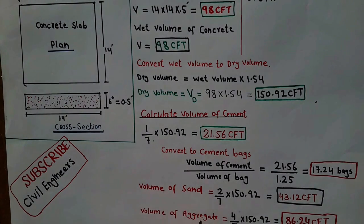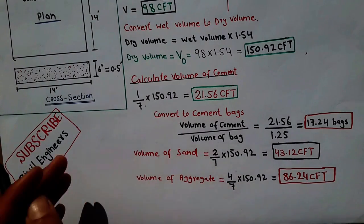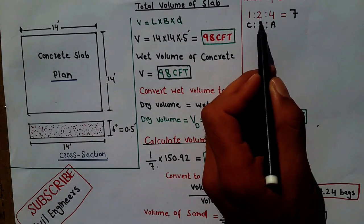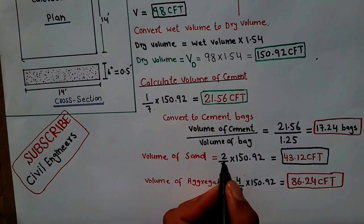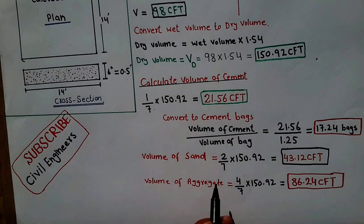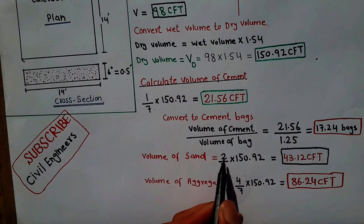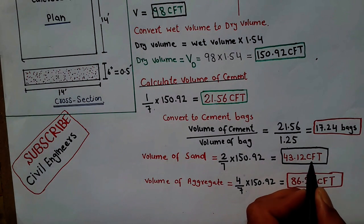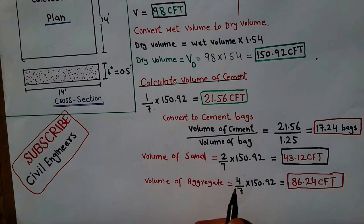For the volume of sand: sand ratio is 2, and sum of ratio is 7. So volume of sand = (2 ÷ 7) × 150.92. You multiply with the dry volume. This gives you 43.12 CFT. So 43.12 CFT is the volume of sand required for this slab.